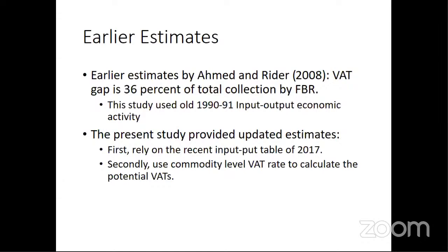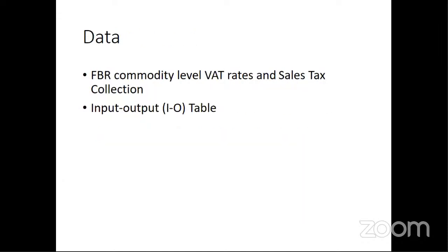Our study updates these estimates. We rely on a recent input-output table which gives the sales tax base. We also connect each sector with the commodity-level VAT rate to calculate potential VAT, minimizing error as much as possible. For the data required: we need the sales tax base derived from the input-output table and the commodity rate actually collected by FBR. The input-output table helps estimate potential VAT from sales, provides information on final consumption, production, use of goods and services, intermediate use, imports, exports, and investment expenditure.